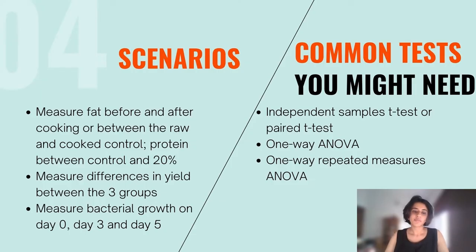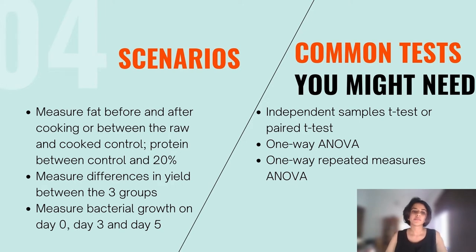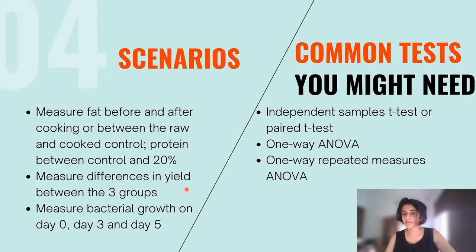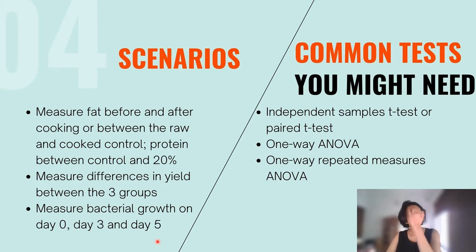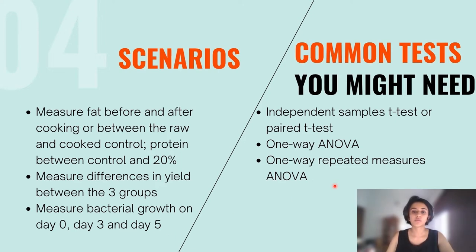So let's say you want to measure fat before and after cooking, or you want to measure protein content between a control and a 20% — you might need what's called a t-test. And if you want to measure differences in yield or protein between all three groups — my control, my 20%, 40% — you might need what's called a one-way ANOVA. You might also take one sample, say the control, and measure bacterial growth on day 0, day 3, and day 5. Because you're measuring the same sample at three different points in time, you might need what's called a one-way repeated measures ANOVA.